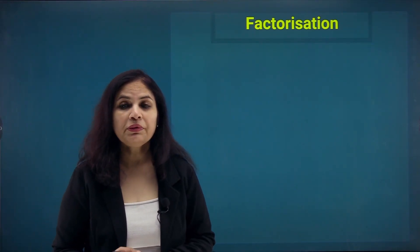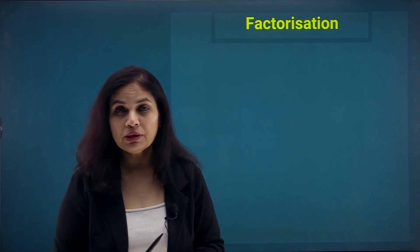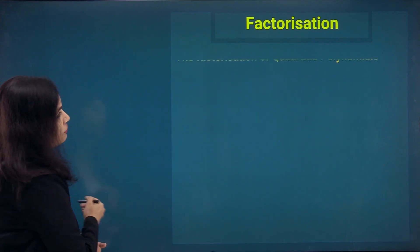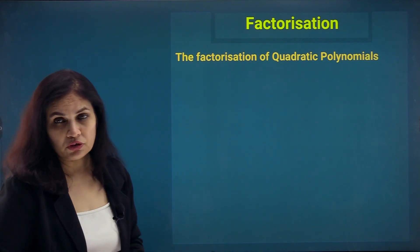In factorization, we will be learning about how to find the factors of a polynomial. For numbers, we used to find factors by taking out all the factors or by prime factorizing the numbers. But what if we have to find the factors of a linear polynomial or any polynomial whose degree is 1 or greater than 1? We have different methods — starting with factorization of quadratic polynomials.